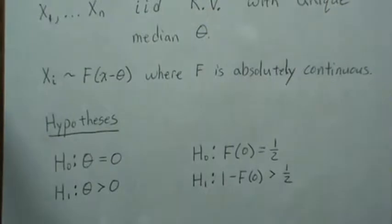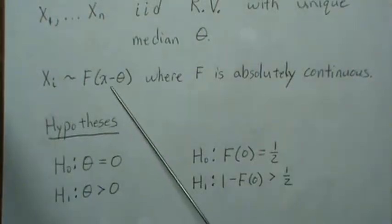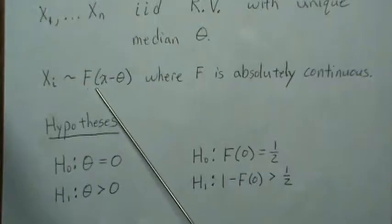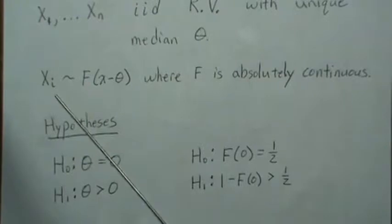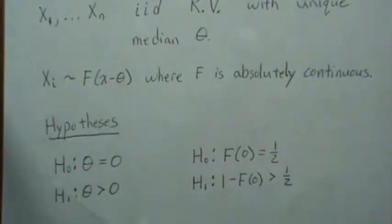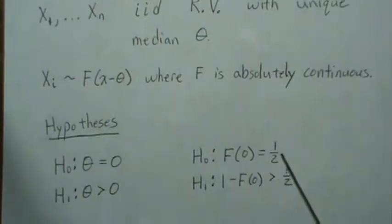Our hypothesis is that the median is zero versus it's greater than zero. So: is the distribution F, or is it shifted to the right by some amount theta? Now technically we don't need the null median to equal zero — it could be theta-naught. But if that's the case we can transform our data: let Y = X minus theta-naught, and then Y under the null has a median of zero. So without loss of generality we assume the median is zero, which is equivalent to saying F(0) = 1/2, by the definition of the median.